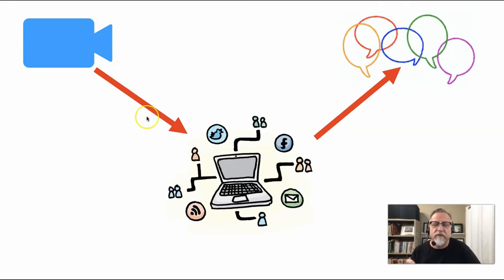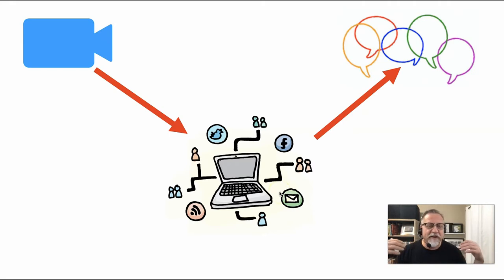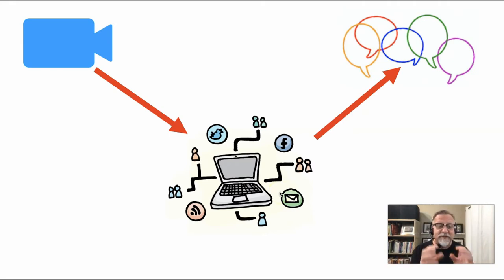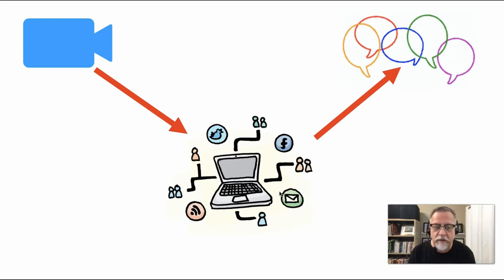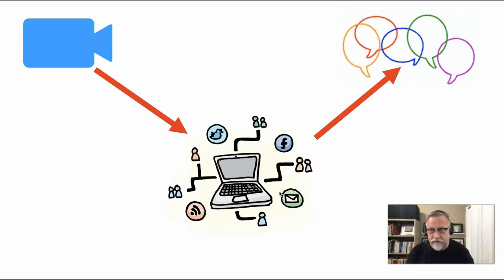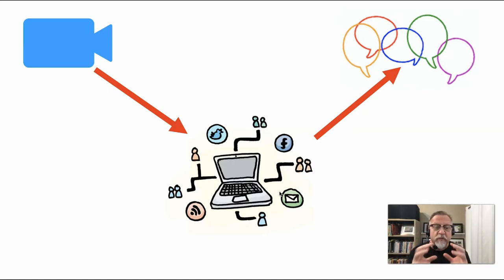Once you've got that video, you want to move it up to the internet. If you're doing it on Facebook, it's really quite easy — you use the Facebook app, create the video, and simply publish it. Similarly with Instagram and TikTok. There are a lot of apps that make it really simple.